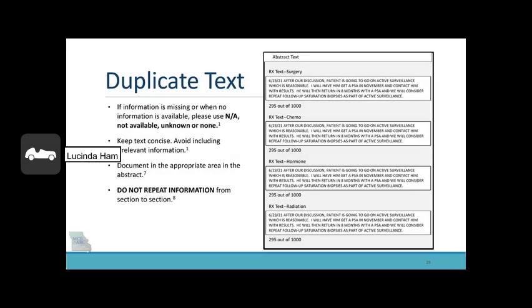Duplicate text. If information is missing or when no information is available, please use NA, not available, unknown, or none. Keep text concise and avoid including irrelevant information. Document in the appropriate area of the abstract and do not repeat information from section to section. For example, a patient with prostate cancer on active surveillance: it is appropriate to put the relevant statement in one treatment box and NA in the other treatment boxes. To put all the same information in all the treatment boxes is irrelevant and excessive.